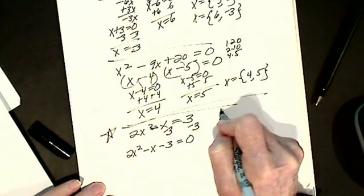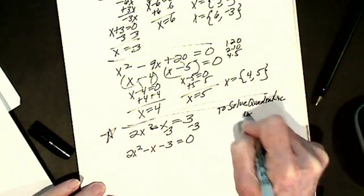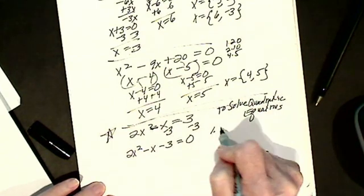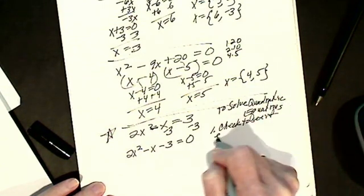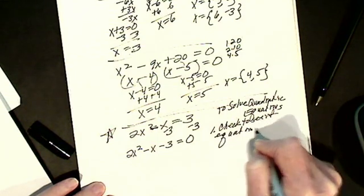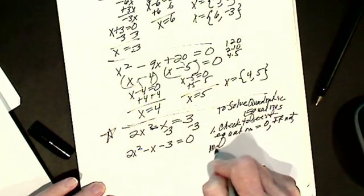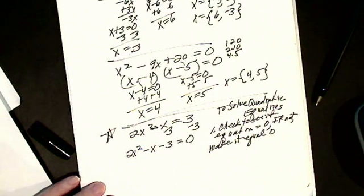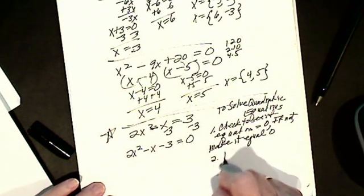Let's go over the steps to solve a quadratic equation — there are only three. Step 1: Check to see if the equation equals 0. If not, make it equal 0. Step 2: Factor.